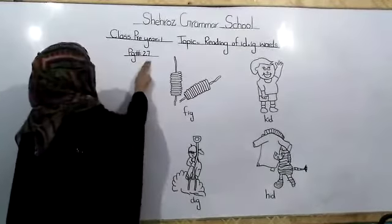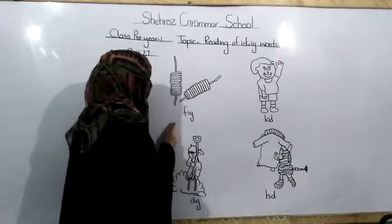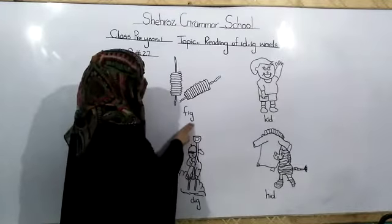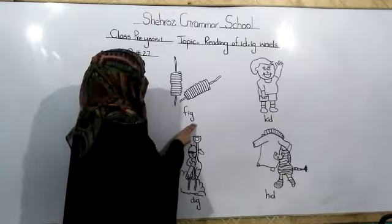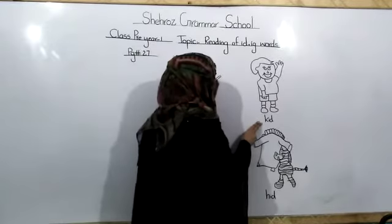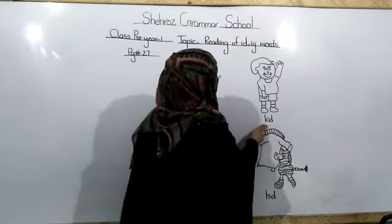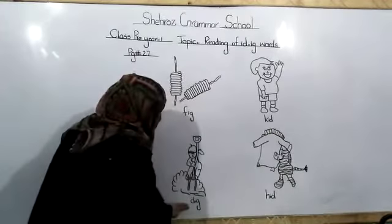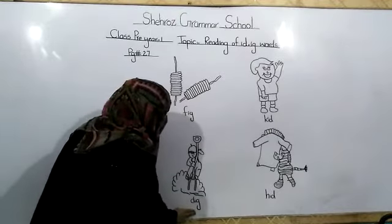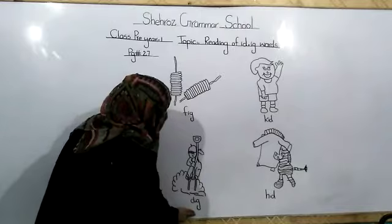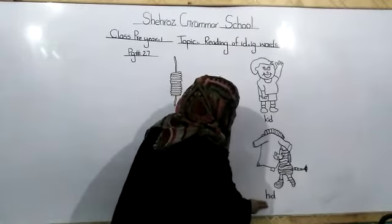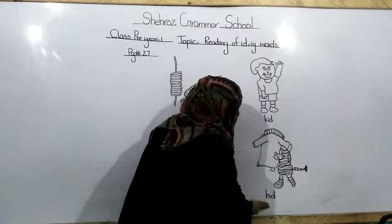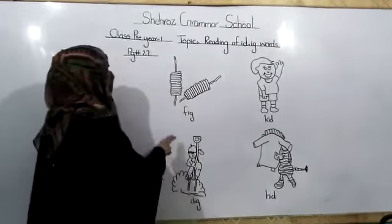Page number 27. Ok children, what is this? This is fig. And this is kid. And this is dig. And this is hid.